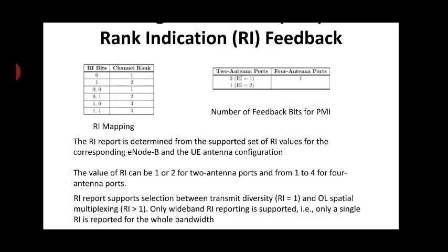If RI equals 1, it reports the selection between transmit diversity and open loop spatial multiplexing. For open loop spatial multiplexing, RI will be greater than 1 only when wideband RI reporting is supported, meaning RI is reported for the whole bandwidth.